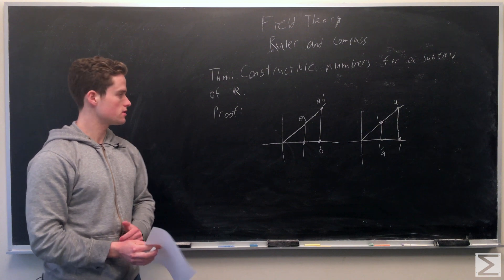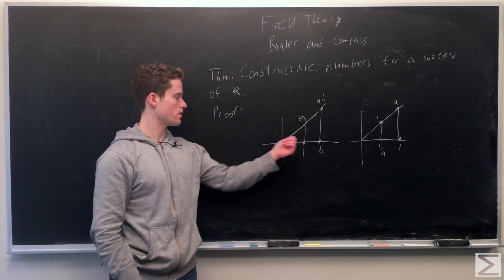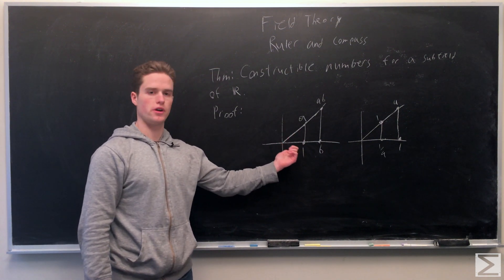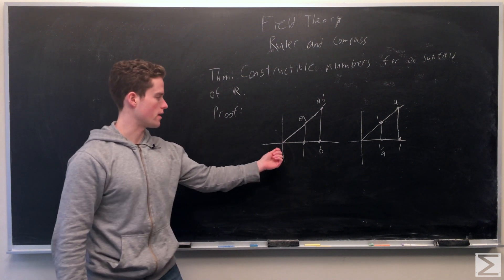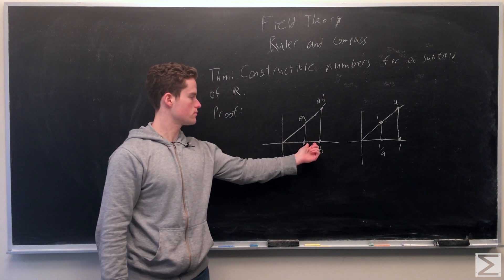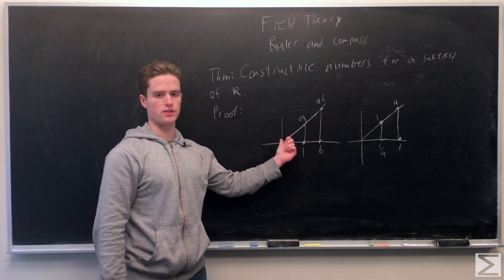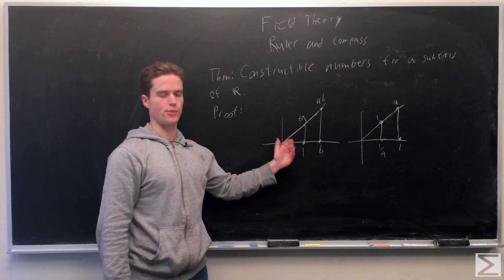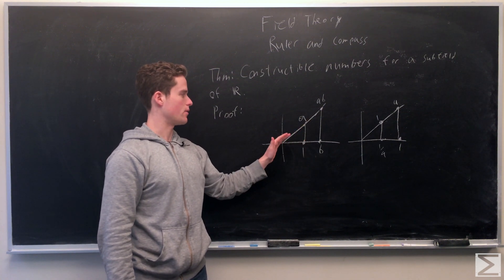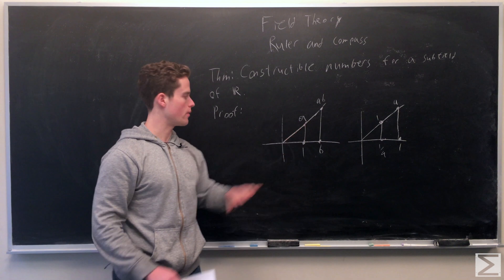For multiplication and inverses, say we have constructible numbers A and B again. One we know is a constructible number. We have one, we have B, and we're going to start at (0,0). We have some line that's not parallel to this line, and we can start at a point length A away from the center.